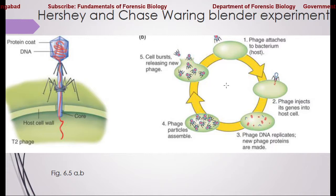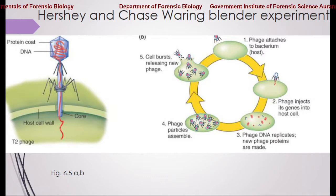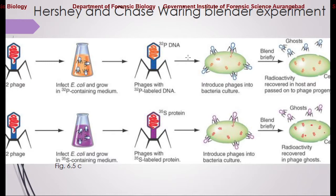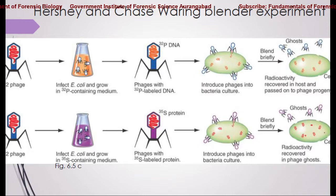When this virus was allowed to infect a host E. coli cell, it completed its lytic life cycle and progeny phage were produced. It was observed that all progeny phage contained P32-labeled DNA and not S35-labeled protein. This shows that DNA — the genetic material — is the only component that enters the host cell, while the protein component does not enter inside the cell. It was another convincing proof that it is DNA which carries genetic information and not the protein.